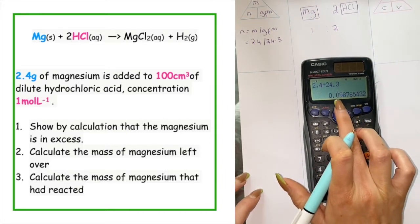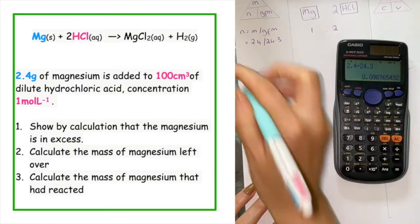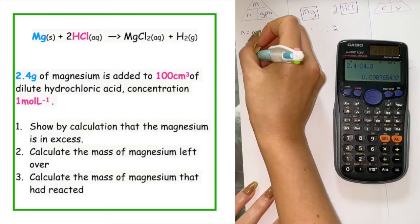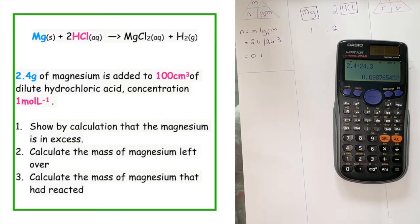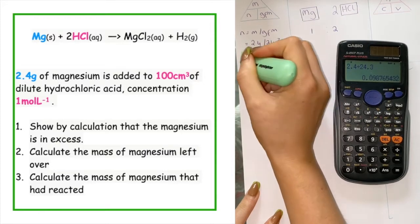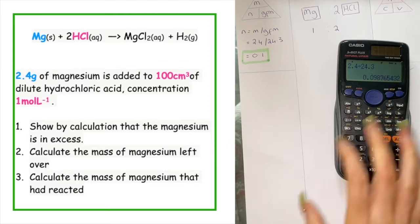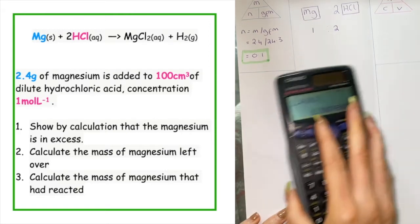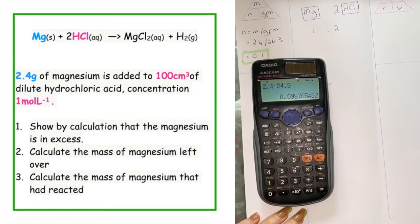If I round that up, that would take us to 0.10, which is equal to 0.1. I want to take a highlighter and put a box around this value because that is what I actually have from the data given in the question. If I look at the information given about hydrochloric acid, it's telling me I have 100 centimetres cubed and the concentration is 1 mole per litre.